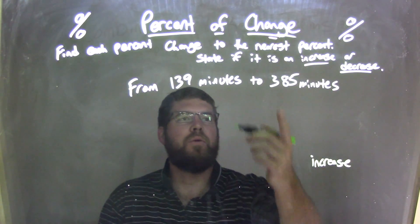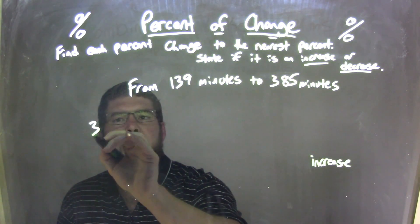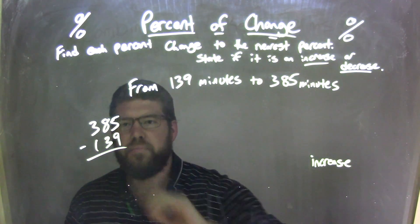Well, now let's find how much of an increase. We're going to find the difference between these two numbers. So I'm going to take my larger number, 385, subtract the smaller one, 139.